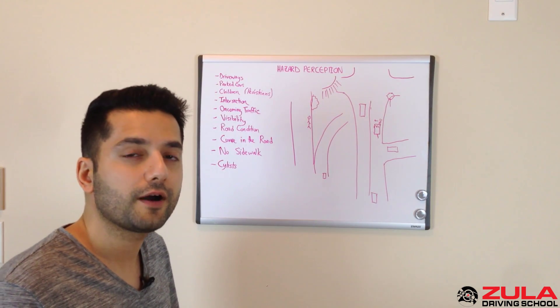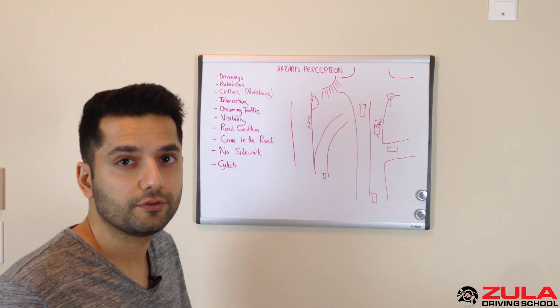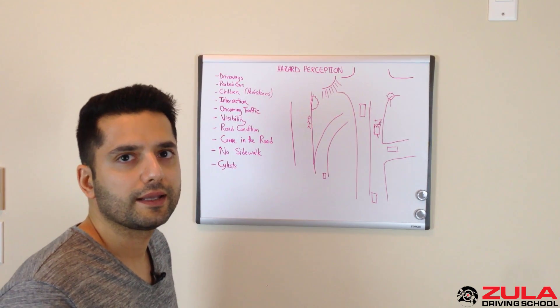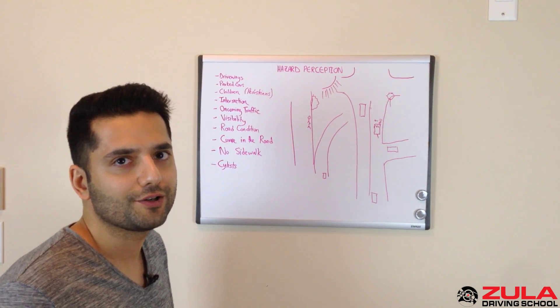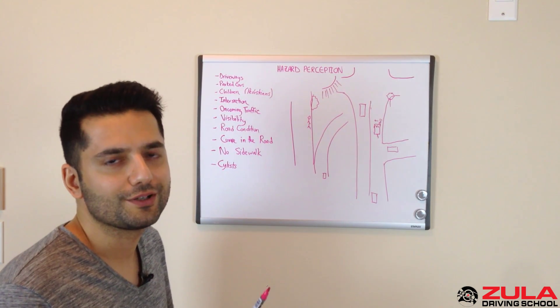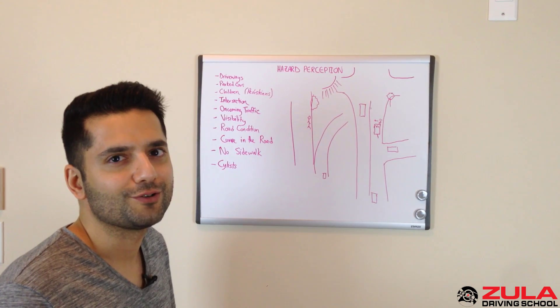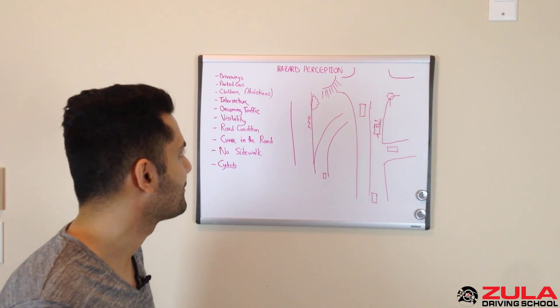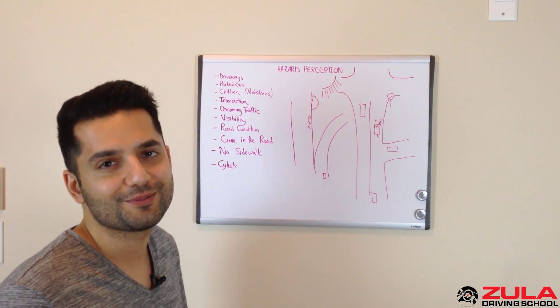When you go for your class five road test, so your full license, they'll ask you to hazards as you're moving. And by that point, after two years of driving on your N, you should be able to spot hazards as you drive. They just don't want to distract you when you're just going for your first road test by having you drive and telling them the hazards. So I hope this video has been useful to you.